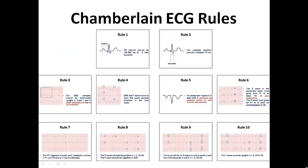In summary, the 10 Chamberlain ECG rules are: Rule 1 checks the PR interval; Rule 2 checks the QRS complex duration; Rule 3 checks complex polarity in leads one and two; Rule 4 checks that QRS and T-waves have the same general direction in limb leads; Rule 5 checks AVR; Rule 6 checks R-wave progression; Rule 7 checks the ST segment; Rule 8 checks the P-waves; Rule 9 checks the presence or absence of small Q-waves; and Rule 10 checks T-wave polarity in leads one, two, and V2 to V6. Thank you for listening and I hope you have benefited from this lecture.